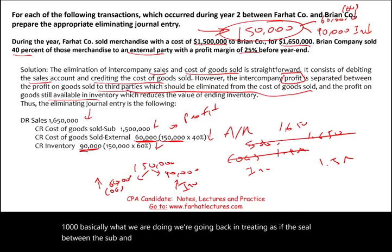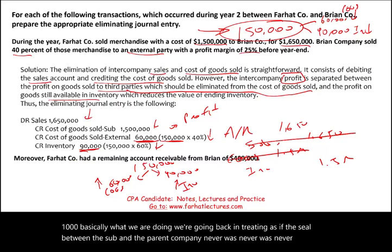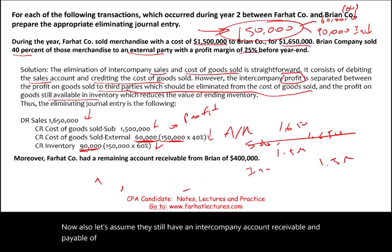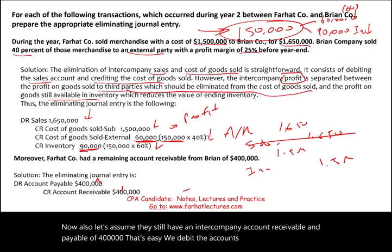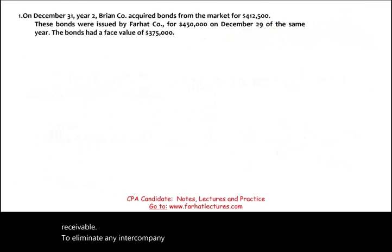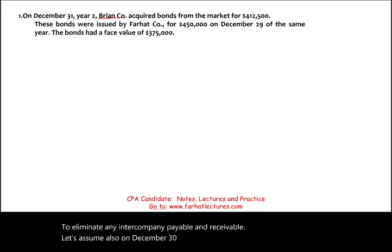There is also an intercompany accounts receivable and payable of $400,000. The eliminating entry debits accounts payable and credits accounts receivable for $400,000 to eliminate any intercompany payable and receivable.